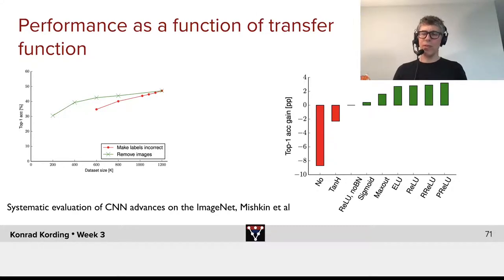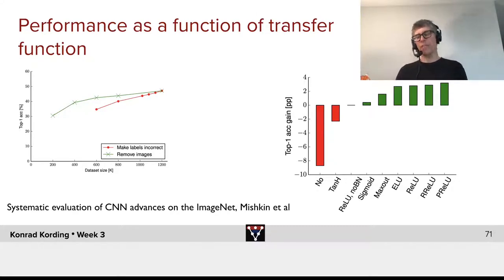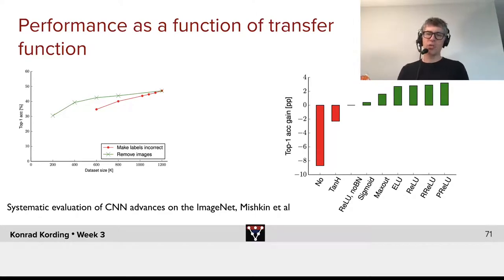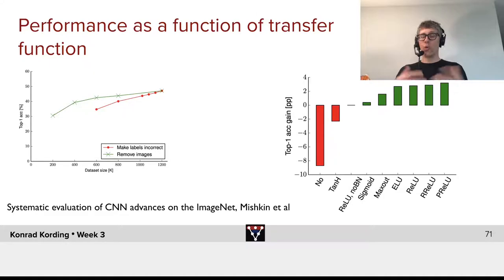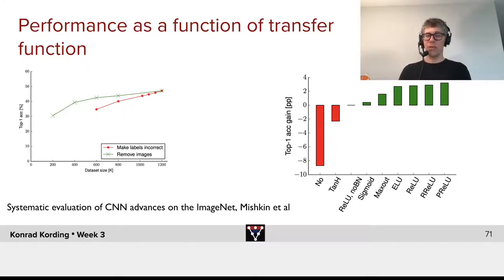What we see on the right-hand side is the effect of using different transfer functions. If we have a linear system, of course, we lose a lot of performance — maybe twice as much as we gain by scaling from 600,000 to 1.2 million.